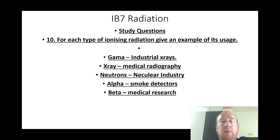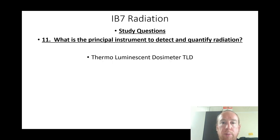For each type of ionizing radiation, give an example of its usage: gamma — industrial radiography; X-rays — medical radiography; neutrons — nuclear industry; alpha — smoke detectors; beta — medical research. What are the principal instruments to detect and quantify radiation? TLD dosimeters — thermoluminescent dosimeters.